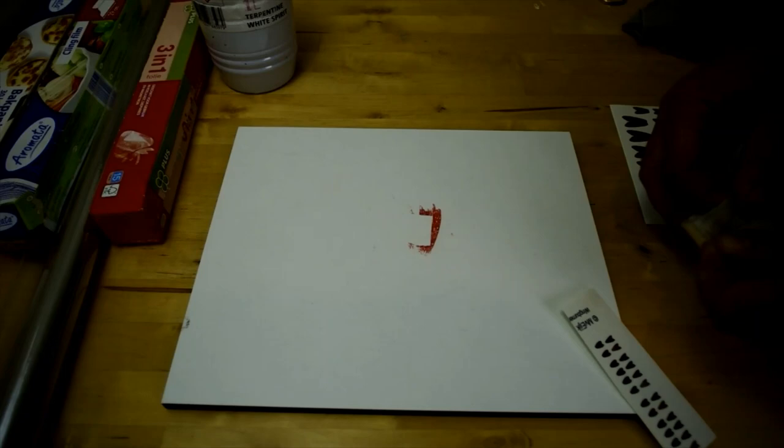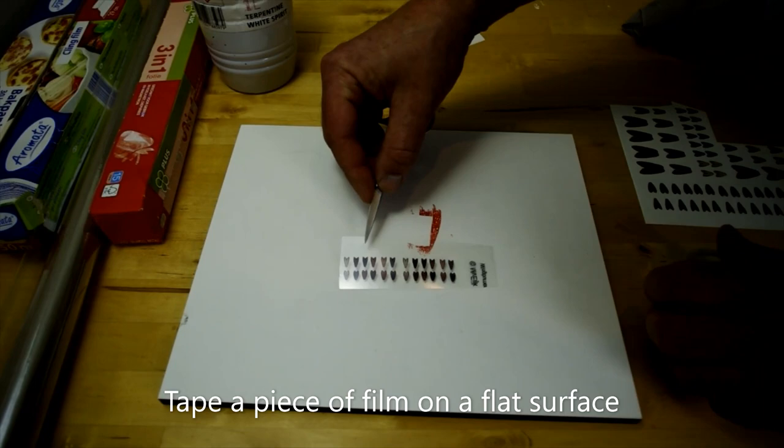You only have to remove the sticky glue layer. To remove the glue I tape a piece of film onto a flat board and use white spirit to remove the glue.